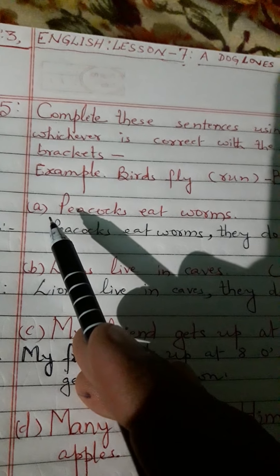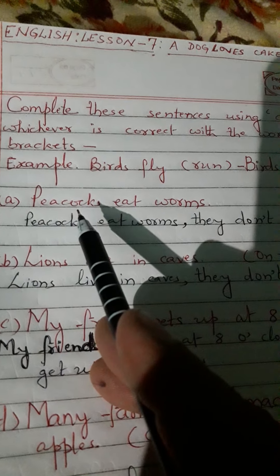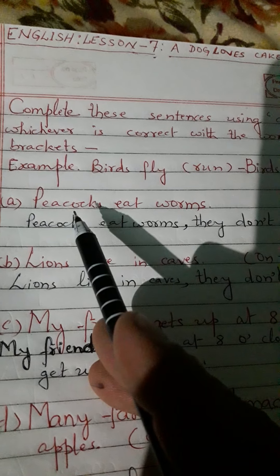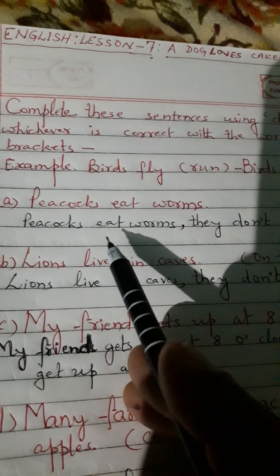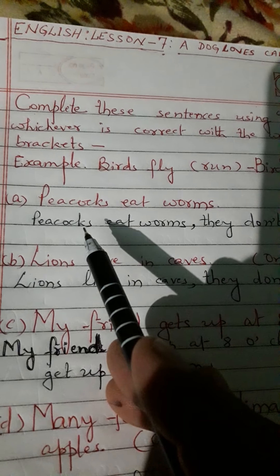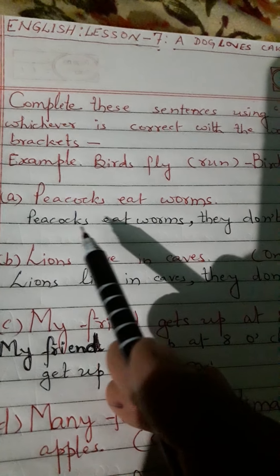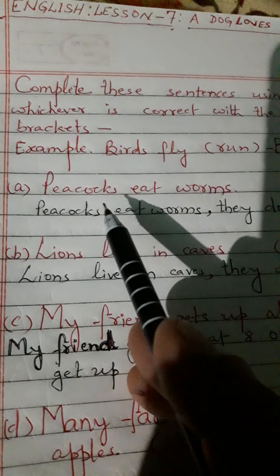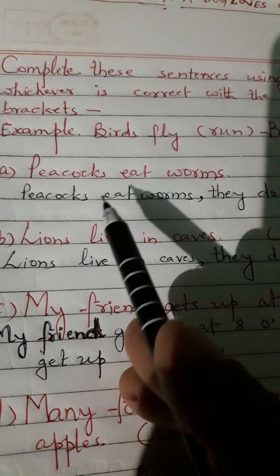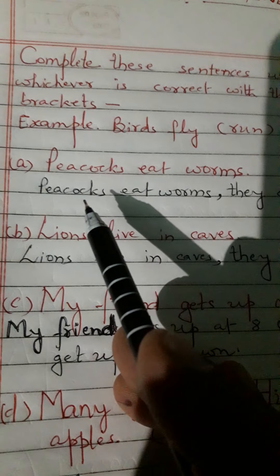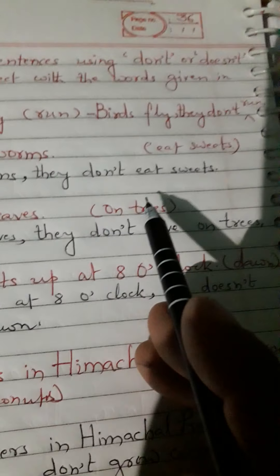आपकी सुविधा के लिए प्रश्न के भाग लाल इंक से लिखे गए हैं और उत्तर के भाग ब्लैक इंक से लिखे गए हैं। आप इसे सुनेंगे और नोट करेंगे। पहला — Peacocks eat worms. इसका रूपांतरित रूप होगा: Peacocks eat worms — they don't eat sweets.